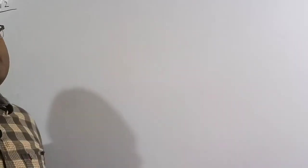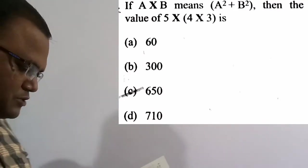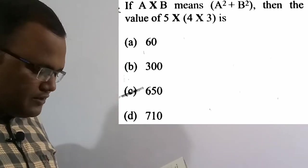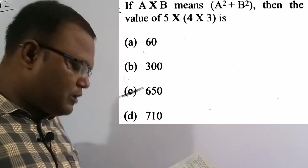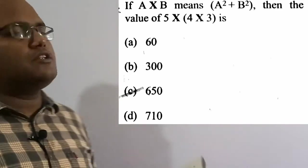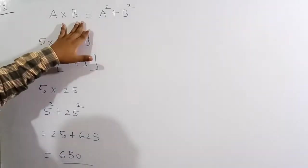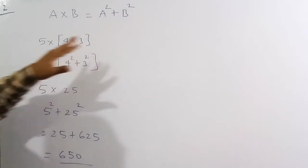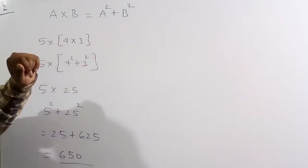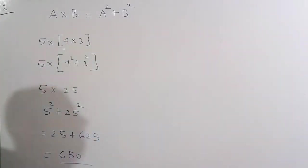Now solving the 12th question: if a cross b means a² + b², find the value of 5 cross (4 cross 3). Option C, 650, is the correct solution. We apply the formula first to the inner term: 4 cross 3 = 4² + 3².